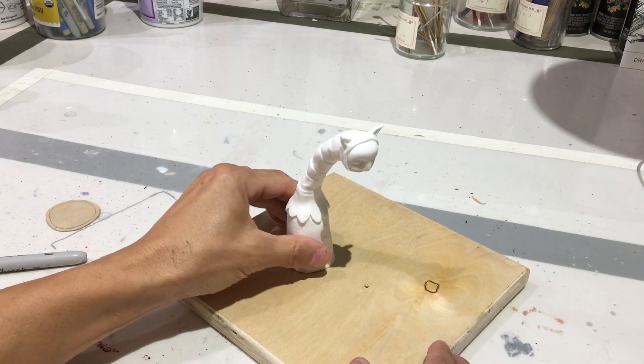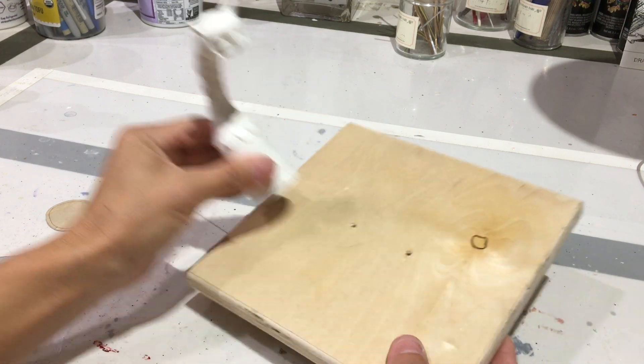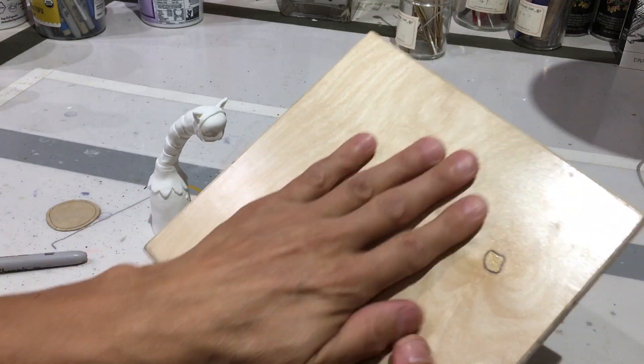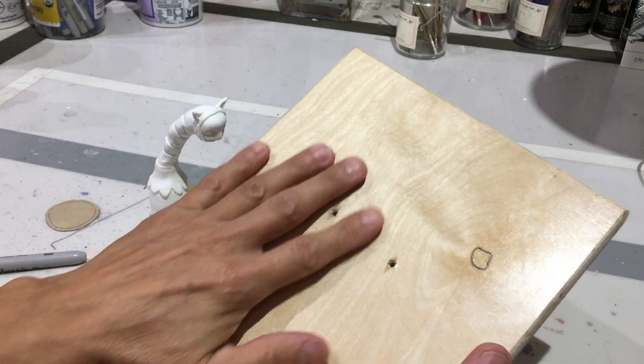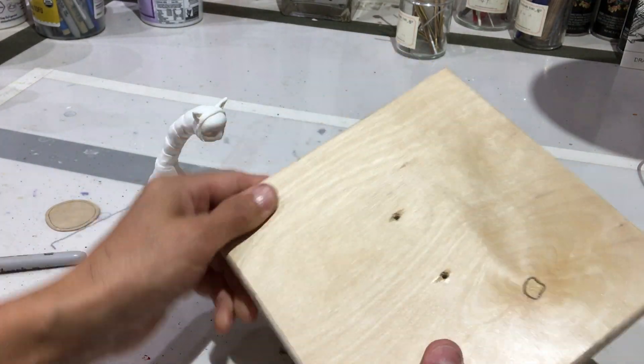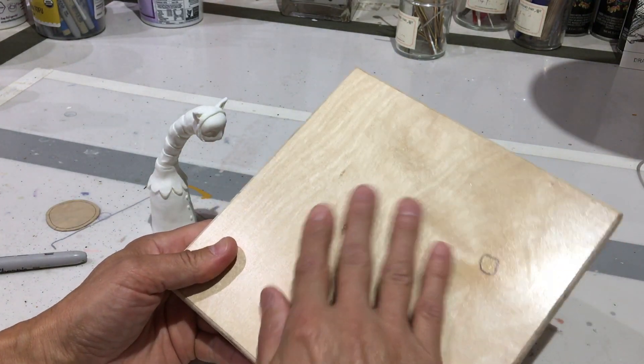So the first thing I'm going to do is mount it to a board. And what I'm using here is just cabinet grade plywood. That just means that it's sealed and super smooth. Silicone will not stick to this surface, especially if I put a little mold release onto it.